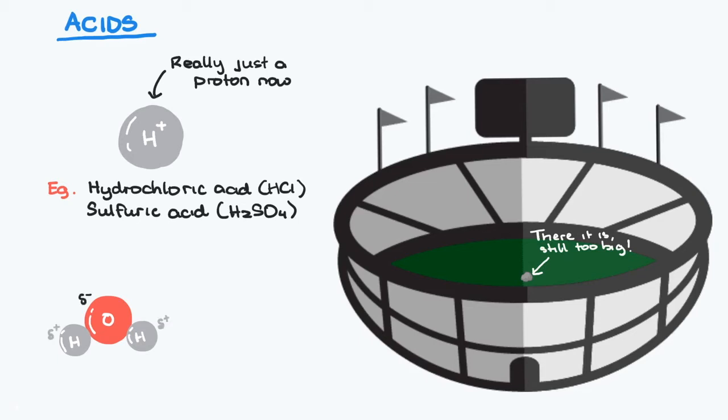Therefore when acids are dissolved in water, the water molecule is protonated by the hydrogen ion and creates what is called the hydronium ion, but it is absolutely acceptable to write this as just a hydrogen ion in chemical reactions.